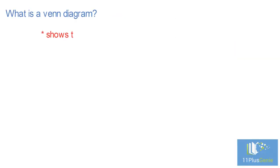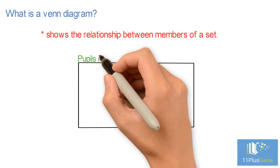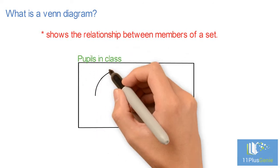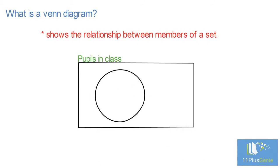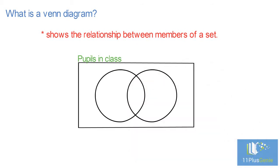A Venn diagram shows the relationship between a group of different things, a set, in a visual way. Using Venn diagrams allows us to sort data into two or three circles which overlap in the middle. Each circle follows a certain rule so any numbers or objects placed in the overlapping part, the intersection, follow both rules.